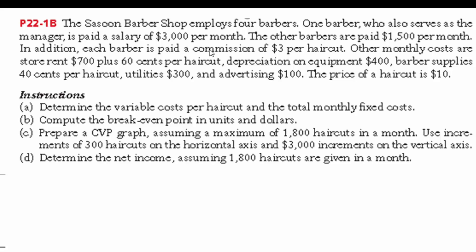In addition, each barber gets a commission of $3 per haircut. Other monthly costs are: rent of $700 plus 60 cents per haircut to the landlord, depreciation on equipment of $400, barber supplies of 40 cents per haircut, utilities of $300, and advertising of $100. The sales price of each haircut is $10.